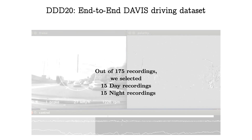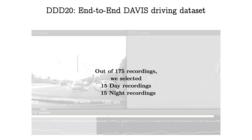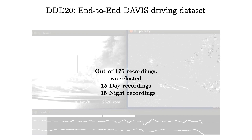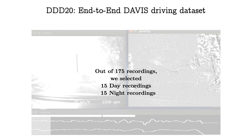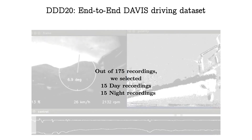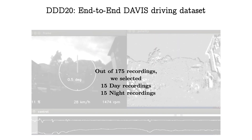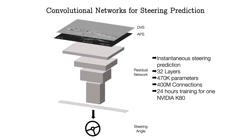For our experiment, out of 175 recordings, we selected 15 daytime recordings and 15 nighttime recordings covering a range of road types and lighting conditions. We manually pruned the ends where the car was pulling onto or off the roads. We chose the first 70% of the data as training data and the last 30% as test data. We chose the 32-layer residual network as the baseline network to study steering angle prediction. The network has 470K parameters and nearly 400 million connections, with a linear output layer producing one output for instantaneous steering angle prediction. Each model requires 24 hours of training on one NVIDIA K80.